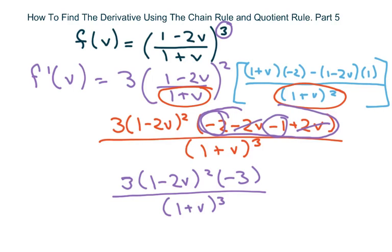And then the last step is to multiply the constants here. So you get negative 9 times 1 minus 2V squared over 1 plus V cubed. And that's all. Thank you and have a nice day.